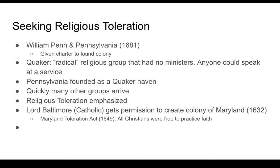Related to dissent is the desire for religious toleration. Two colonies in particular were established because of minority religious groups wanting that toleration. William Penn, a Quaker, established the colony of Pennsylvania in 1681. Quakers were considered radical — they had no ministers and believed anyone could be inspired by the Holy Spirit to speak. Pennsylvania was founded as a haven for Quakers, but many groups arrived because of good land and a good harbor in Philadelphia. They allowed other Christians to practice their beliefs.